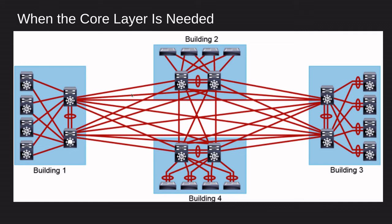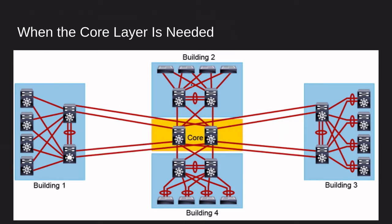But if you add a core in a tier-three design, you end up with far fewer cables. From building one, all you need to do is connect to the core — you don't need a fully meshed topology connecting to buildings two, three, and four. You just run into the core and run a dynamic routing protocol there. From that, you can reach buildings two, four, three, five, six, and whatever else, because the core has connectivity to all the other buildings. That's why you need the core layer.